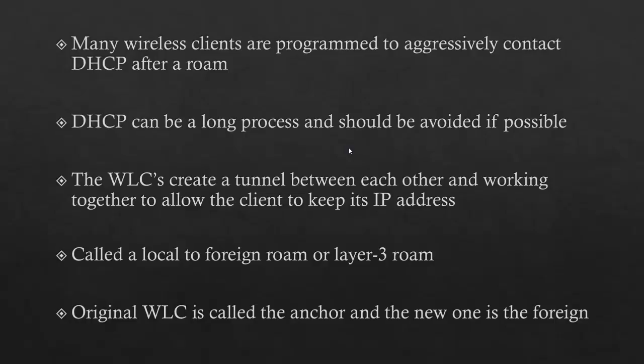That's why your cell should be built so that access points where a person would normally roam should all be on the same controller. But if not, the wireless LAN controllers create a tunnel between each other and can allow the client to keep its IP address — this is called a local to foreign roam. So if you're in subnet 1 moving to a new wireless LAN controller on subnet 2, the new controller becomes the foreign wireless LAN controller and talks back to the original. The new access point becomes the foreign wireless LAN controller and acts as a pass-through for the original wireless LAN controller.